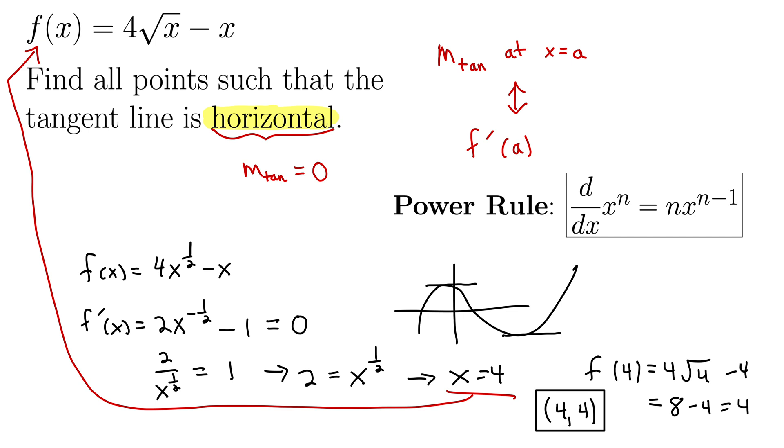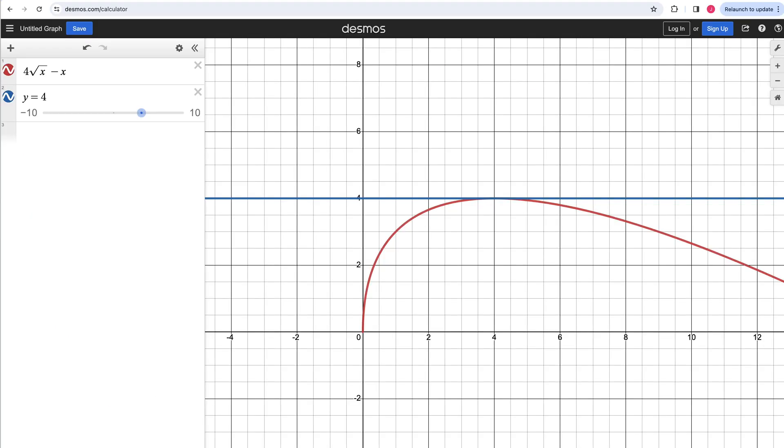Let's take a quick look at this on Desmos and interpret this result. Okay, so here I've plotted the function in red. And you can see that indeed at x equals 4, it's going up from 0 to 4. And then it stops and turns around,